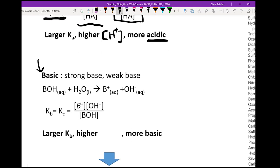Using the same concept, you can write the same thing for your base. Assuming I have a base with this form - BOH - it's going to interact with water, producing B+, which is the conjugate acid of your base, plus OH-. Then you can write out the equilibrium constant equation for this. Again, if you have a larger Kb, you're going to have high concentration of OH-, making the solution more basic.